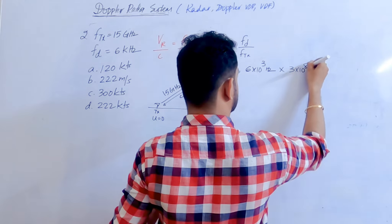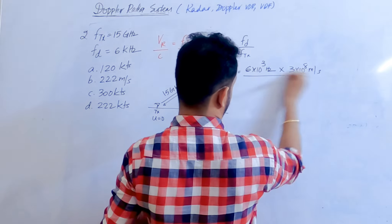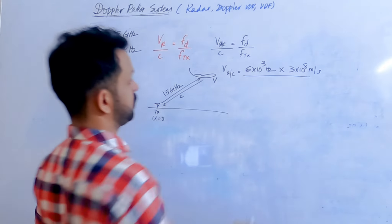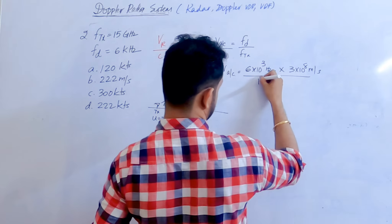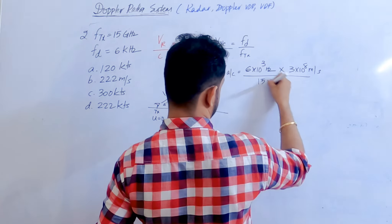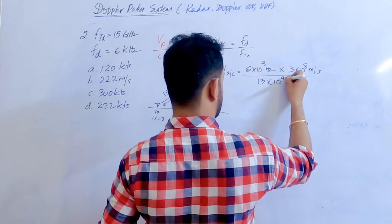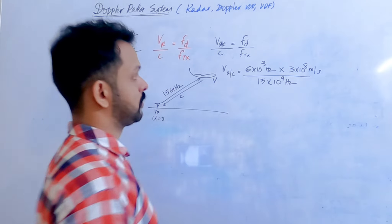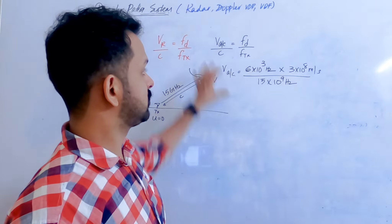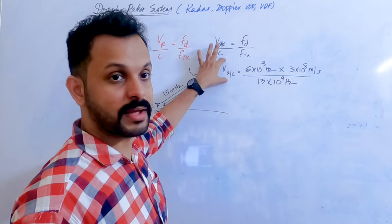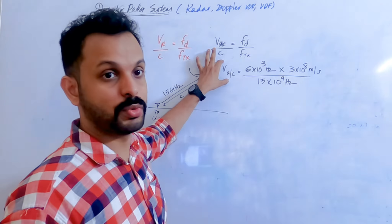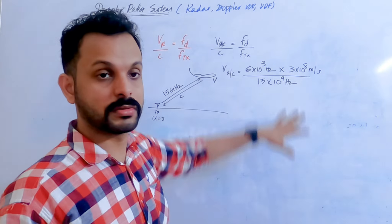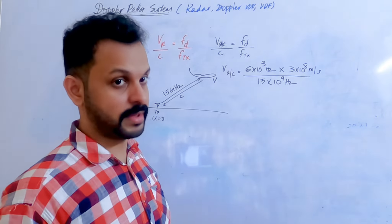What is the velocity? It is in metres per second, divided by the frequency of the transmitter, 15 × 10⁹ hertz. When you solve this, you will get the answer in meters per second.